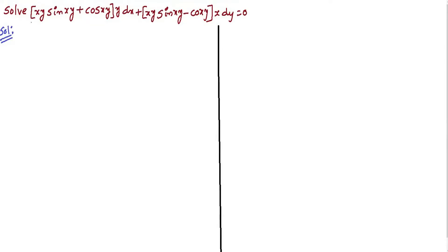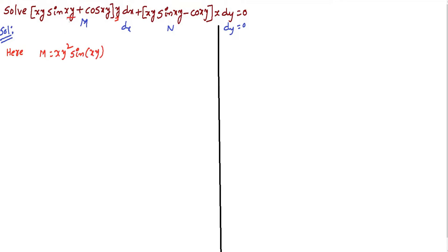This is the next problem in the concept of integrating factors. The equation is (xy·sin(xy) + cos(xy))·y·dx + (xy·sin(xy) - cos(xy))·x·dy = 0. Here M equals y multiplied inside: x·y²·sin(xy) + y·cos(xy).